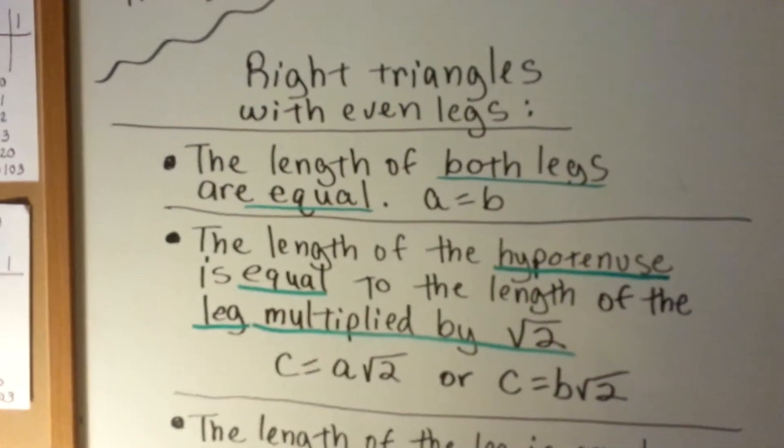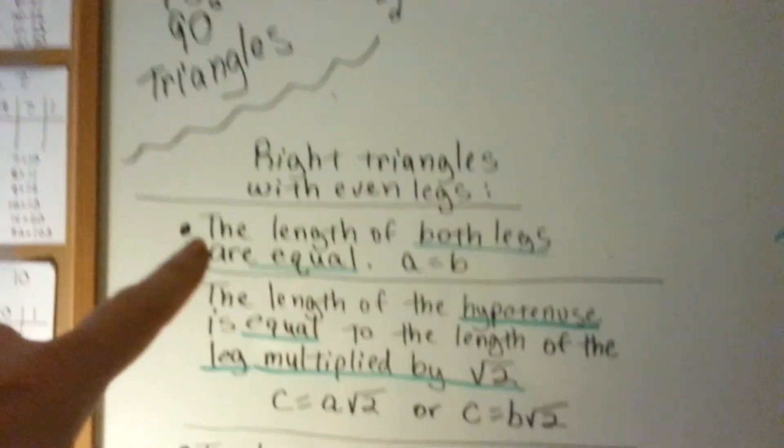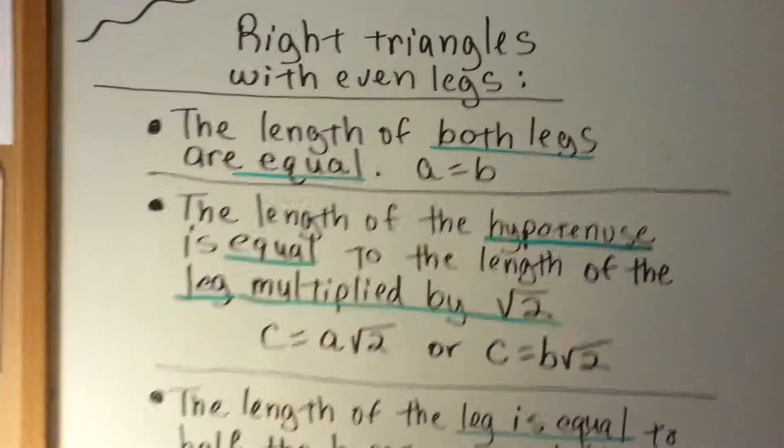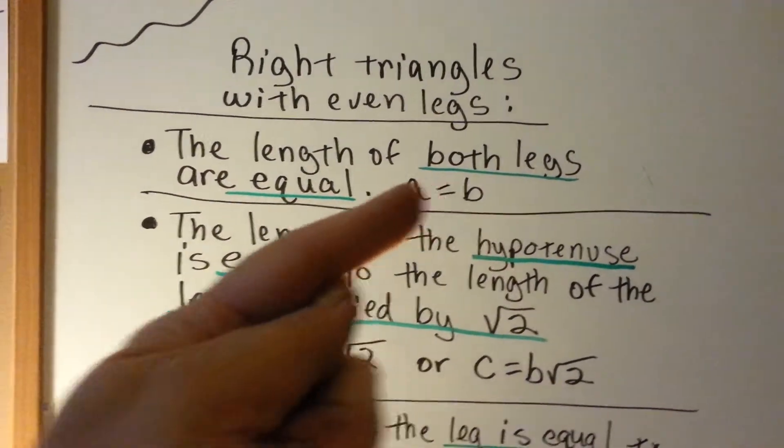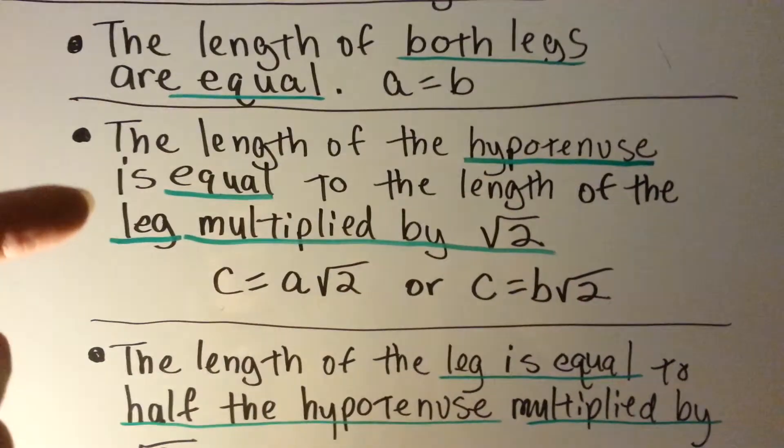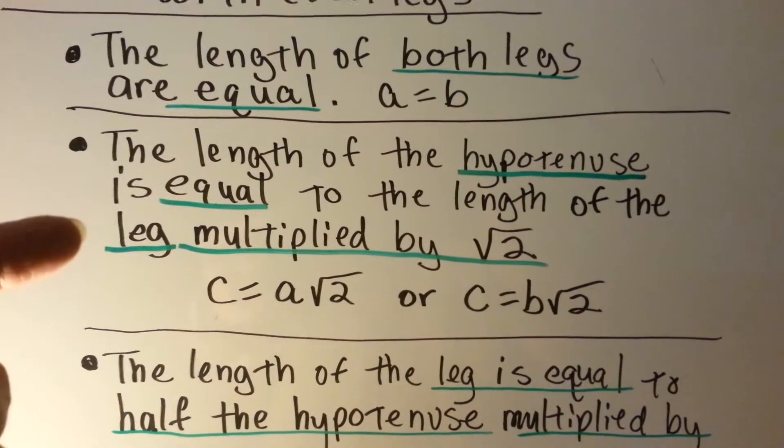Right triangles with even legs. See? They've got two identical angles. That means the legs are the same. So, the length of both legs are equal. A is equal to B.